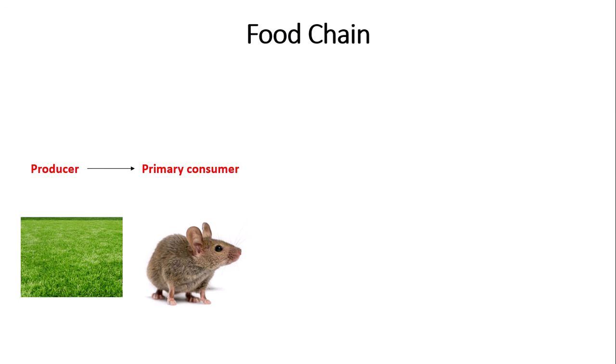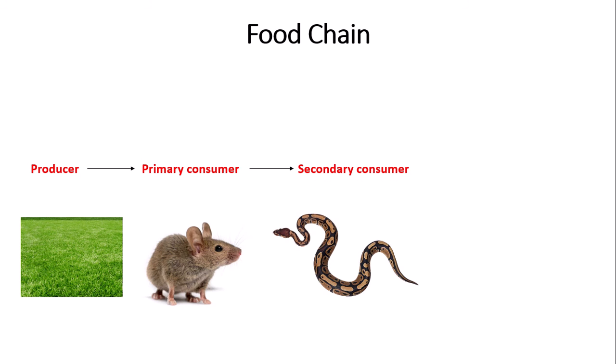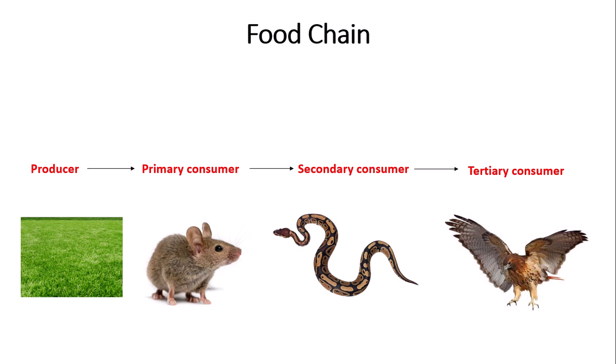The next thing we're going to focus on is food chains and the flow of energy through them, which is the main bulk of the video. A food chain consists of many different levels, or trophic levels as we call them at A level. First we have a producer, which is something like a plant or grass. Then we have a primary consumer, for example a mouse. Then a secondary consumer, for example a snake, and then a tertiary consumer, for example a hawk.